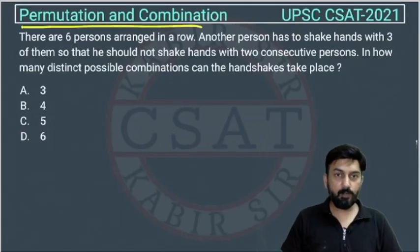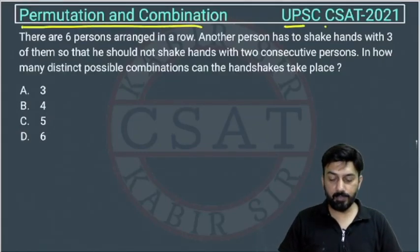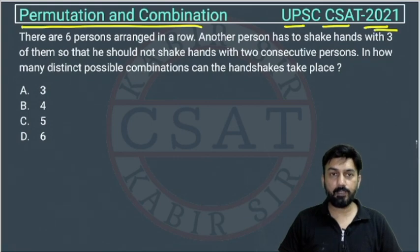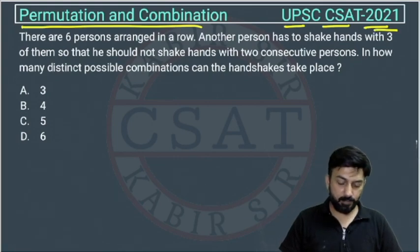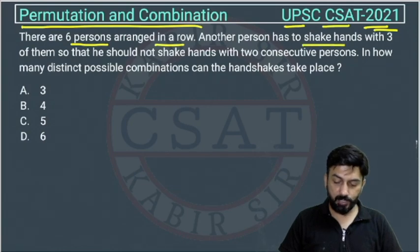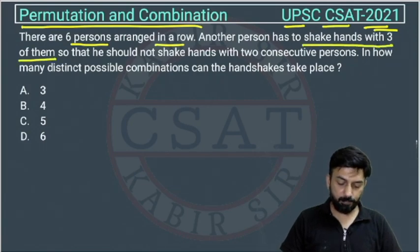This is a question from the permutation and combination chapter asked by UPSC in their CSAT paper of 2021. There are six persons arranged in a row. Another person has to shake hands with three of them so that he should not shake hands with two consecutive persons.